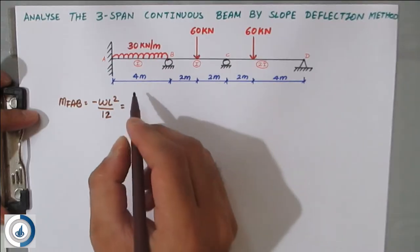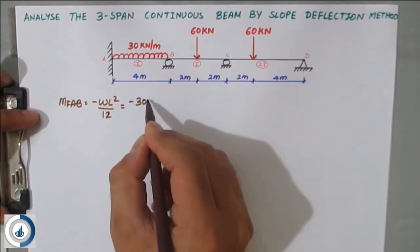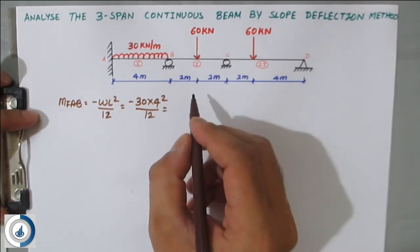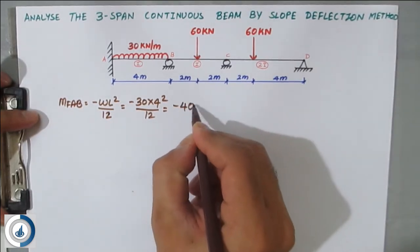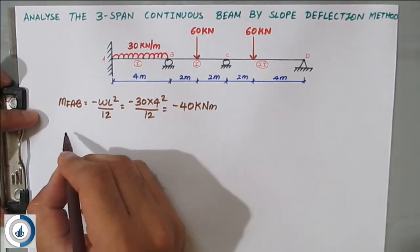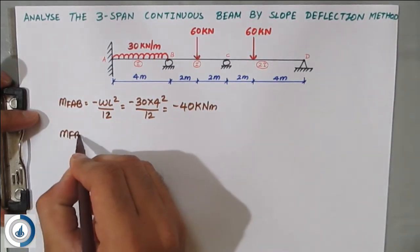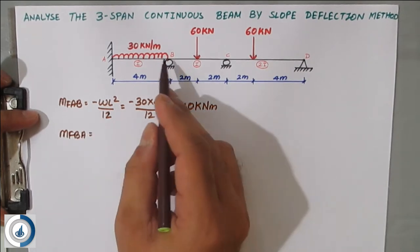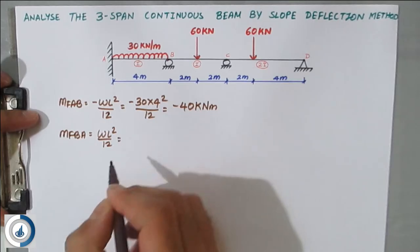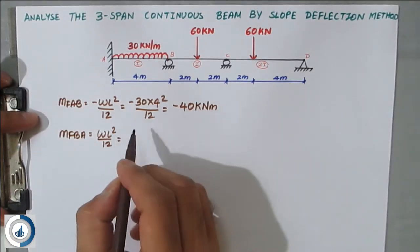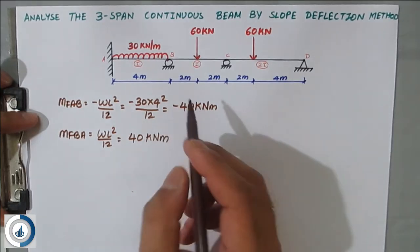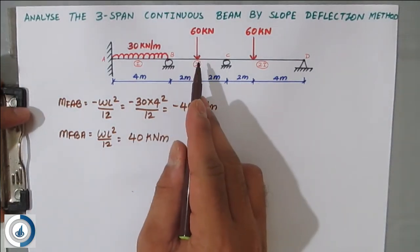Substituting for MF_AB: w is 30, L is 4, so MF_AB = −30×4²/12 = −40 kN·m. Similarly, MF_BA = +wL²/12; the load and span remain the same, so MF_BA = +40 kN·m. The next loading condition is a point load placed at the center.